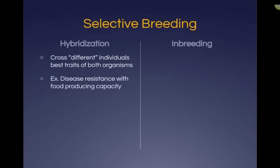A great example of hybridization is combining disease resistance with food-producing capacity. We might take one breed of corn that has great resistance to a specific type of aphid and breed it with another type of corn that produces a higher yield — more corn kernels — so farmers can get more from the product. By hybridizing these two strains, we get the best of both worlds. We do this with dogs too — puggles, labradoodles, and other cross-breeds. We also do this with plants, like broccoflower, the grapple (a grape-apple cross), or tangelos.